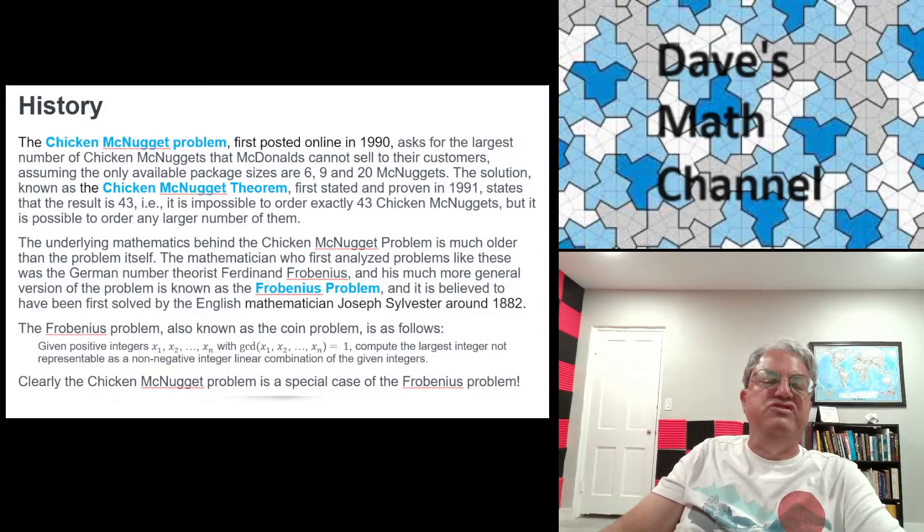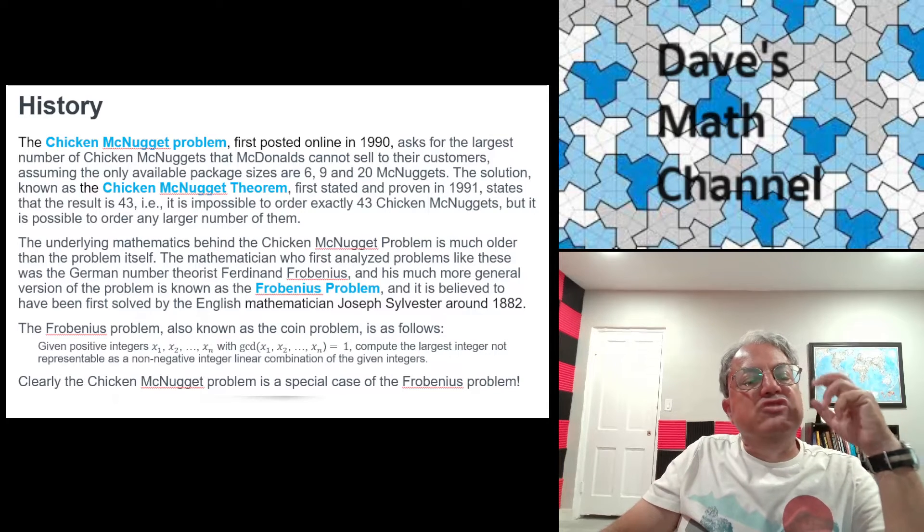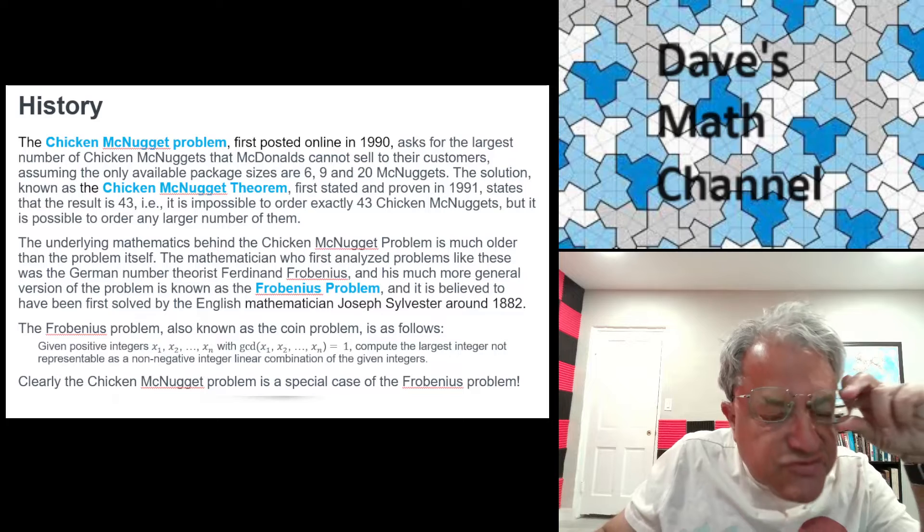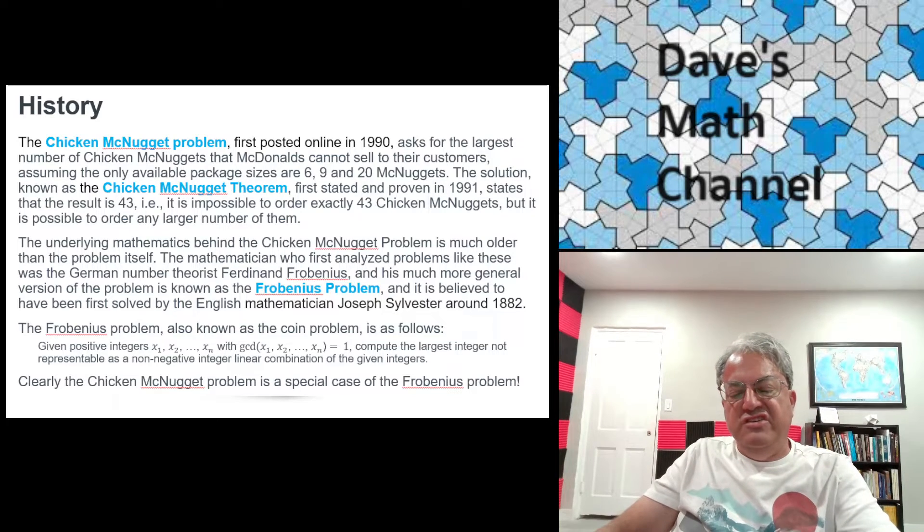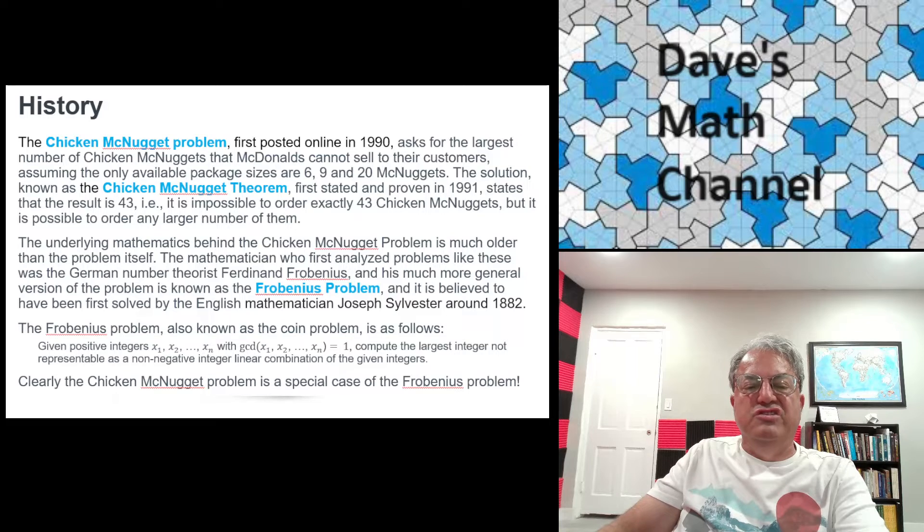And there's actually formulas for that. And I think the first person to actually solve the Frobenius problem was another famous mathematician. It was an English mathematician named Joseph Sylvester around 1882. So it's a pretty old problem.